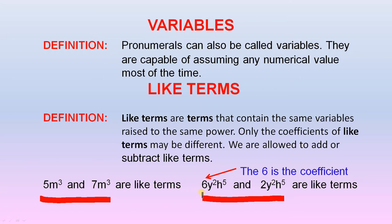The 6 here is referred to as the coefficient. It's normally the number in front of the term. In that example, 6 is the coefficient.